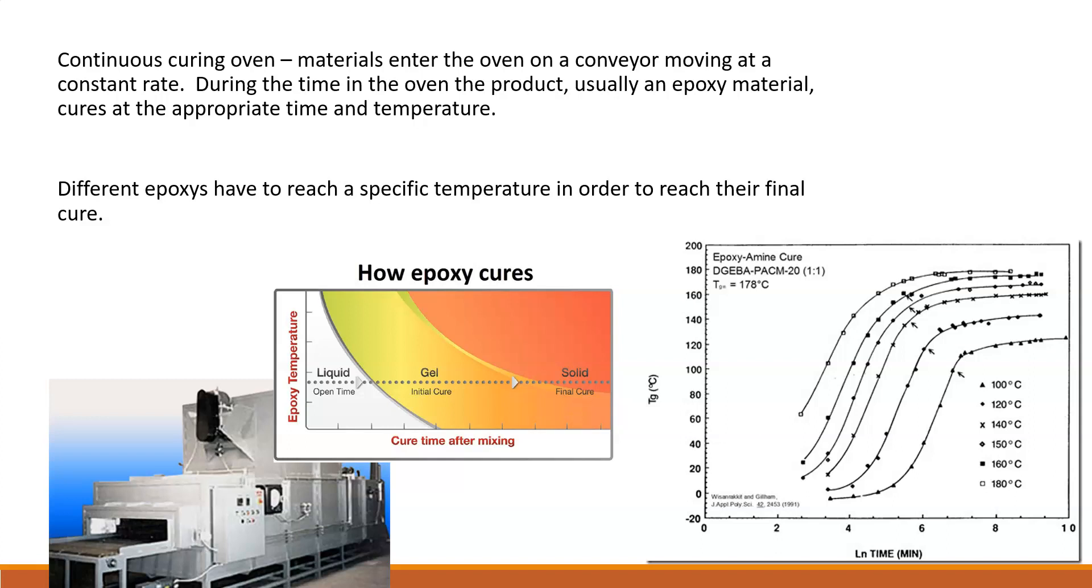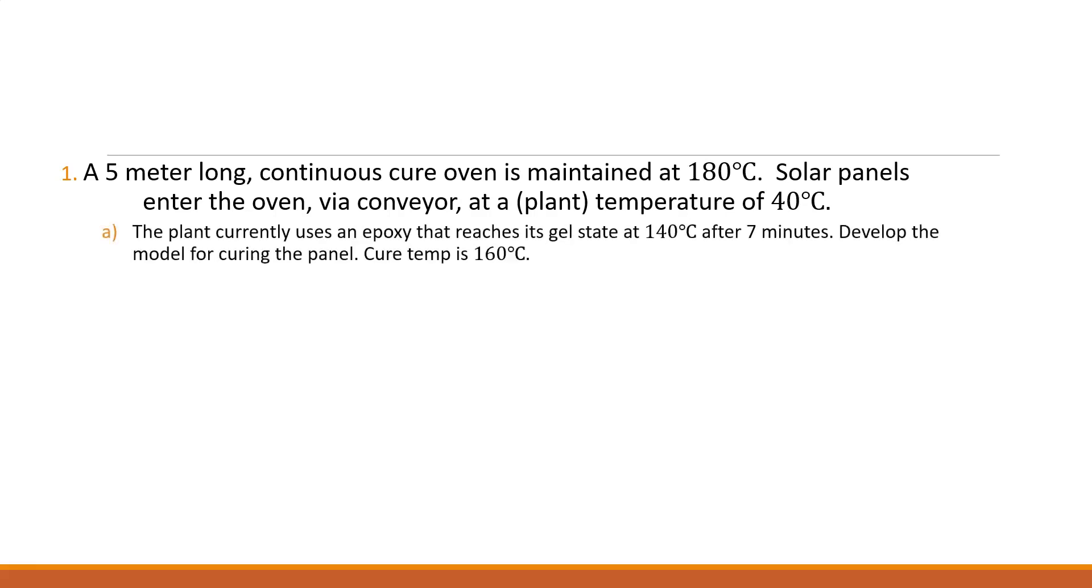So that's what I wanted you to keep in mind as we talk through this problem. So here's the problem. You've got a five meter long continuous cure oven. It's five meters long from one end to the other. The entire oven is maintained at 180 degrees Celsius. Solar panels enter the oven on a conveyor at plant temperature of 40 degrees. It's a warm plant. If you've ever been in a manufacturing setting, it's not unusual for a plant to be pretty hot. So it enters in at 40 degrees C. So you had four things that you had to consider.